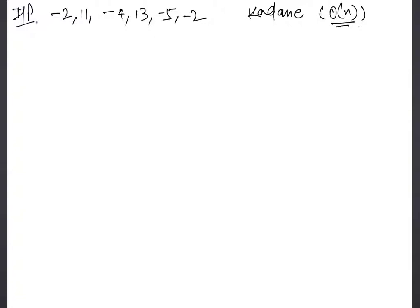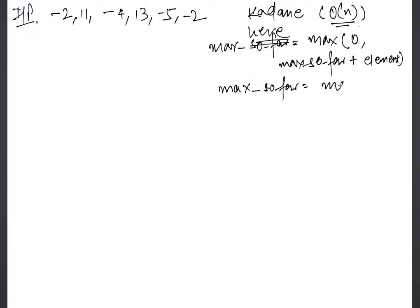So if I have to define it mathematically, I would say max_so_far would be the max of 0, if it's a negative integer we do not want to keep it as negative, we want 0 instead of the negative integer. So max_here plus the element, and the max_so_far is max of max_so_far and max_here.